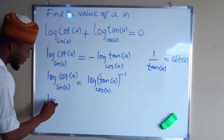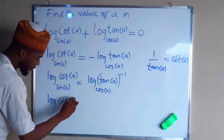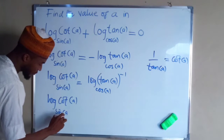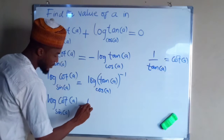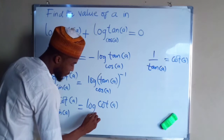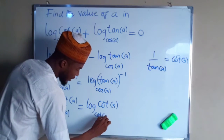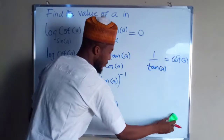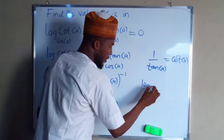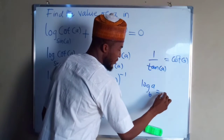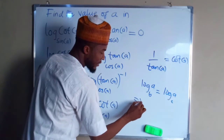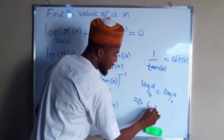So we have log of cotangent A with base sine A. This is the same thing as log of cotangent A with the base of cos A. In logarithm, if you have log A base B equals log A base C, this implies that B is equal to C.